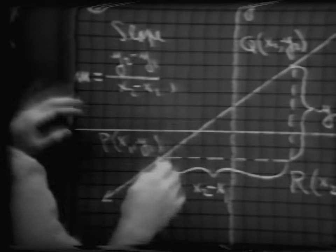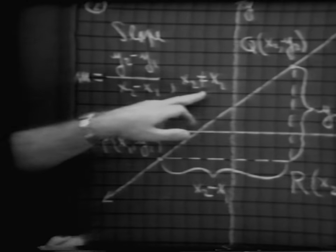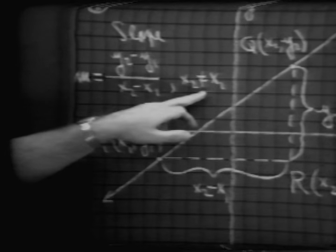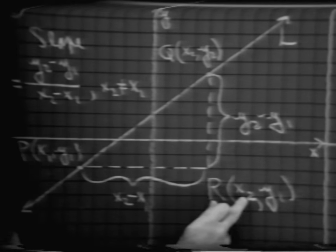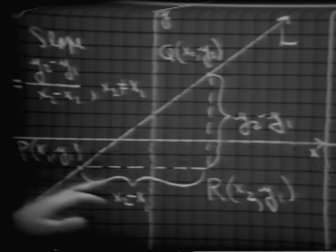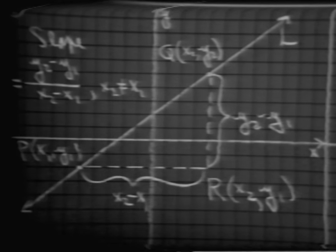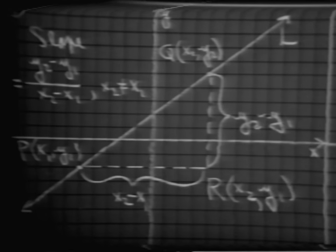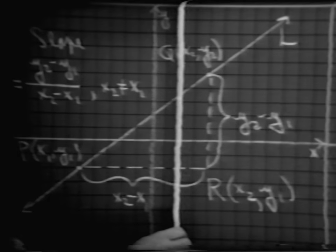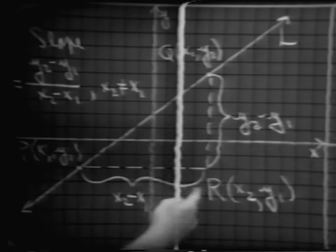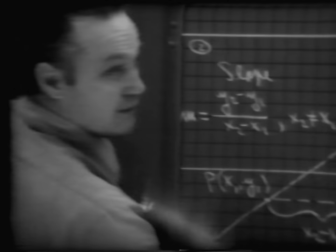Notice now that x sub 2 is not the same as x sub 1. Looking at our picture, if x sub 2 and x sub 1 are the same, what kind of line do we have? It's a vertical line. And in fact, there is no slope number associated with this vertical line, because the change of x is going to be zero, and division by zero is undefined.